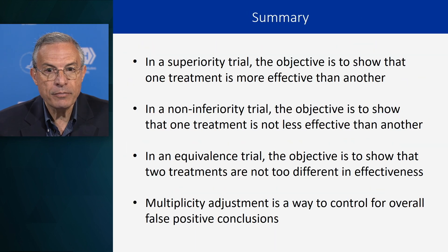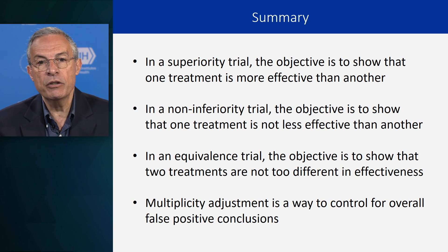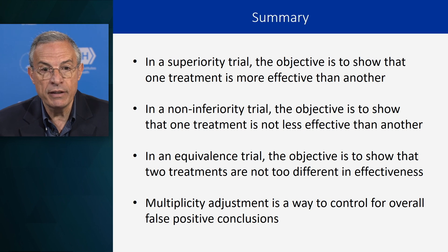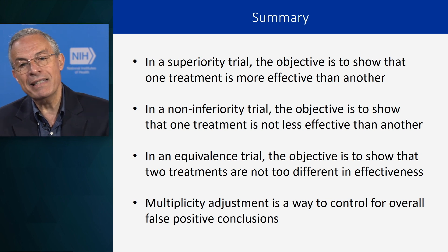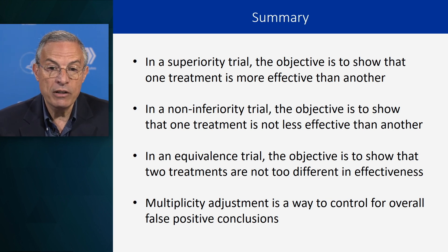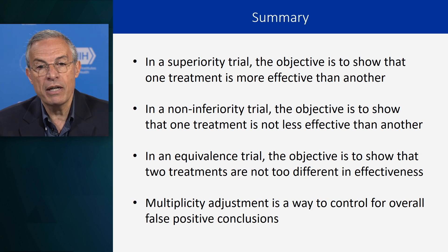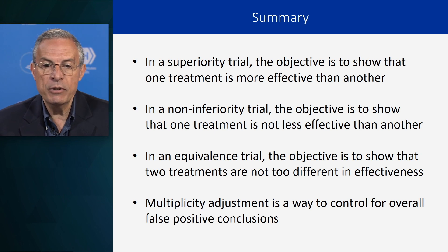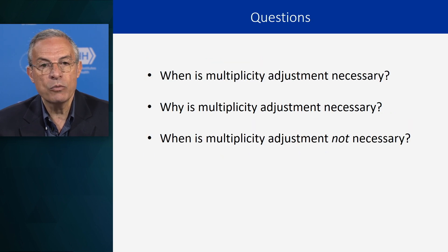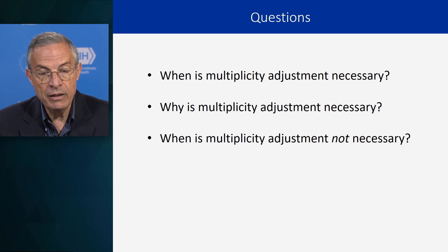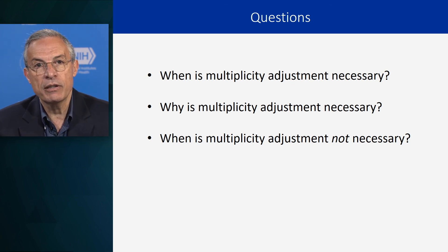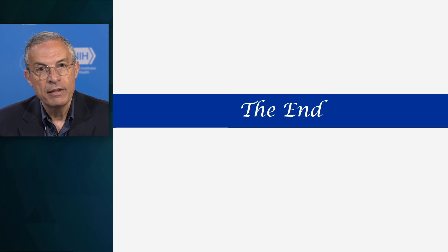Here are the references. In summary: in a superiority trial, the objective is to show that one treatment is more effective than another. In a non-inferiority trial, the objective is to show that one treatment is not less effective than another. In an equivalence trial, the objective is to show that two treatments are not too different in effectiveness. And multiplicity adjustment is a way to control for overall false positive conclusions. My questions to you are: when is multiplicity adjustment necessary, why is multiplicity adjustment necessary, and when is multiplicity adjustment not necessary? Thank you for watching.